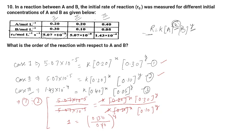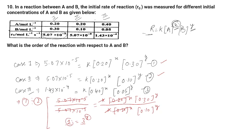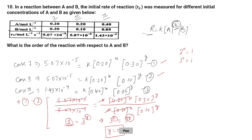After cancellation, we get 1 = (0.30/0.10)^y = 3^y. Since 1 = 3^0, on comparing powers we find y = 0. So the order with respect to B concentration is zero. Now we need to find x, so we will divide equation 3 by equation 1.